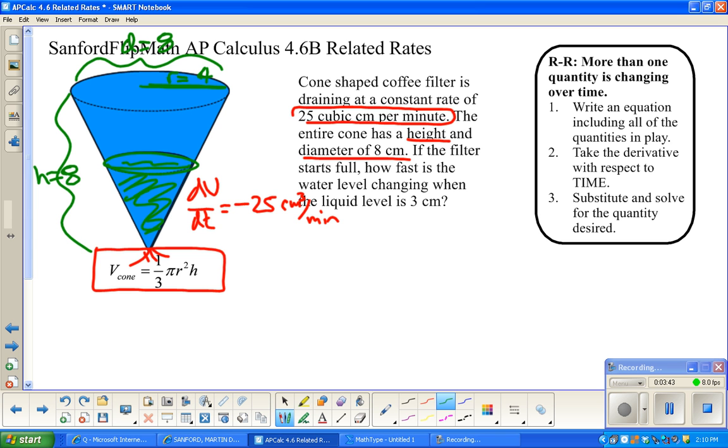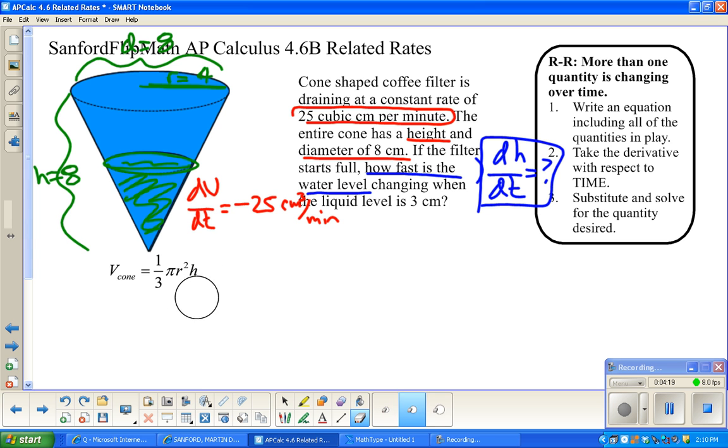So what we want to do is we want to write, we have an equation to work with already. They gave us that, the infamous they, and then we're going to do a derivative. Well, the problem here that I have is that I have r squared and I have h, and so that's too many variables for me. It's really asking me about how fast is the water level. That sounds like height, so we want dh/dt.